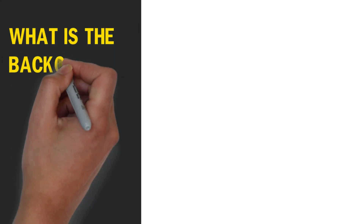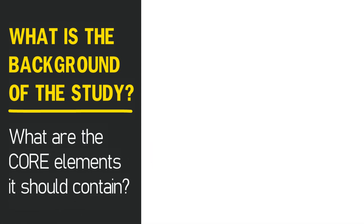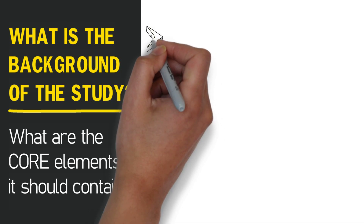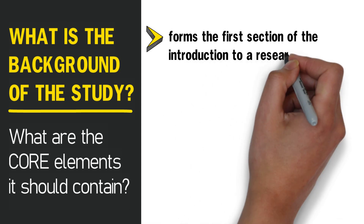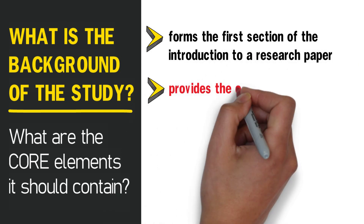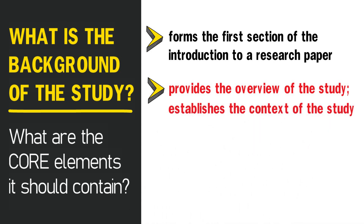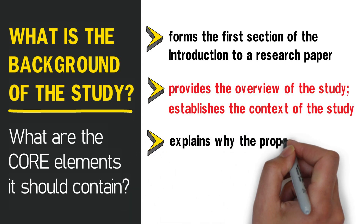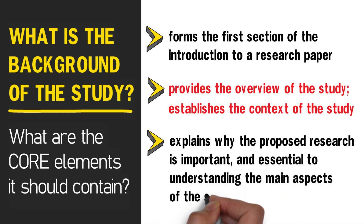So, what really is the background of the study and what are the core elements that it should contain? The background of the study, which usually forms the first section of the introduction to a research paper or thesis, provides the overview of the study. In other words, it is that section of the research paper or thesis that establishes the context of the study. Its main function is to explain why the proposed research is important and essential to understanding the main aspects of the study.